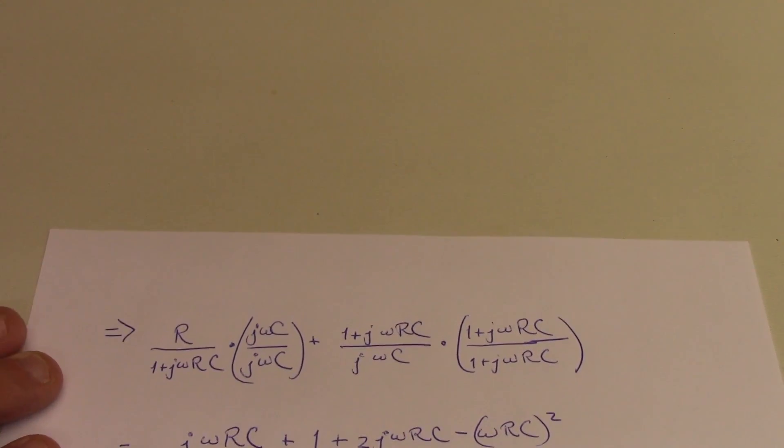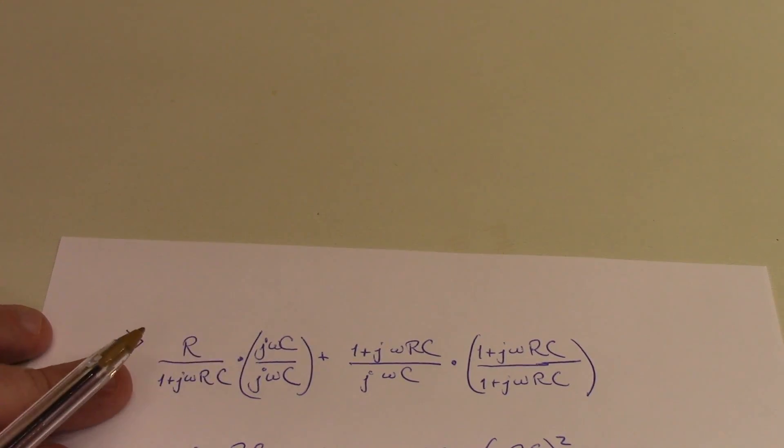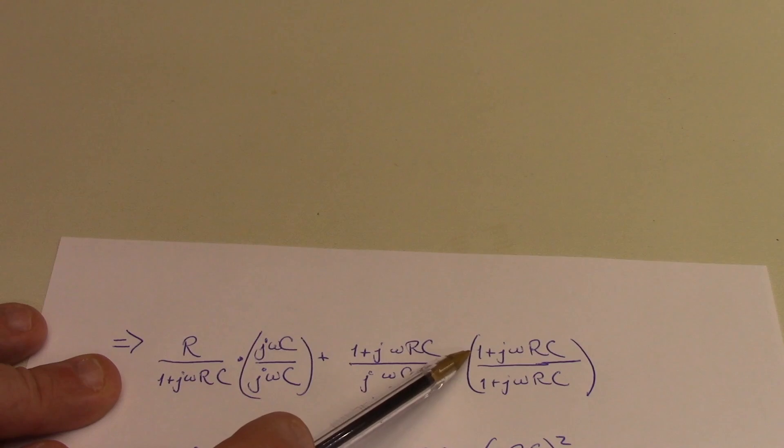So just continuing on a little bit. How do we actually implement that? Well, again, I'm going to multiply that first term by effectively 1, but I'm going to write 1 as j omega c over j omega c. And I'm going to multiply this term by 1 plus j omega rc over 1 plus j omega rc.